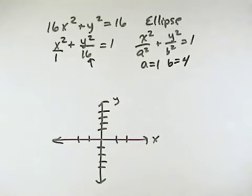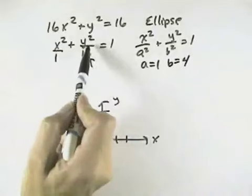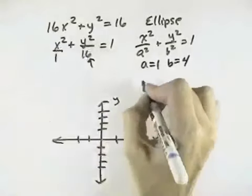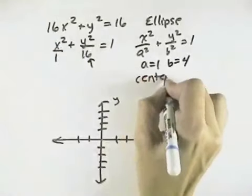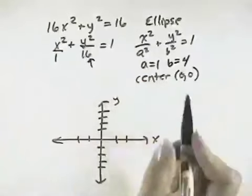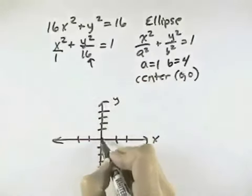To find the center, well, since it's not x minus h or y minus k, that means h and k are both 0. So therefore, if they're both 0, that means it's centered at the origin when we have no additional coefficients. So our center of our ellipse is here.